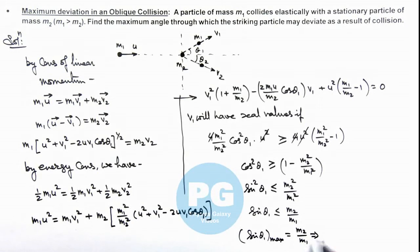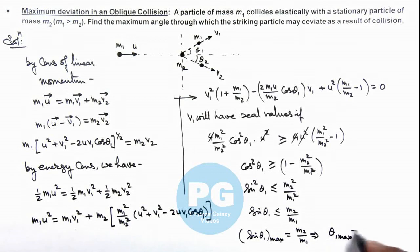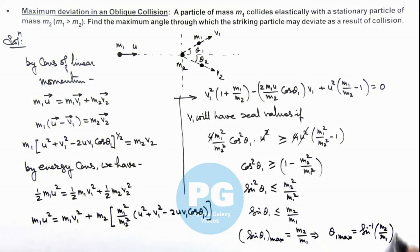This implies the maximum angle at which the striking particle may deviate is given by θ₁_max = sin⁻¹(m₂/m₁). That is the result of this problem.